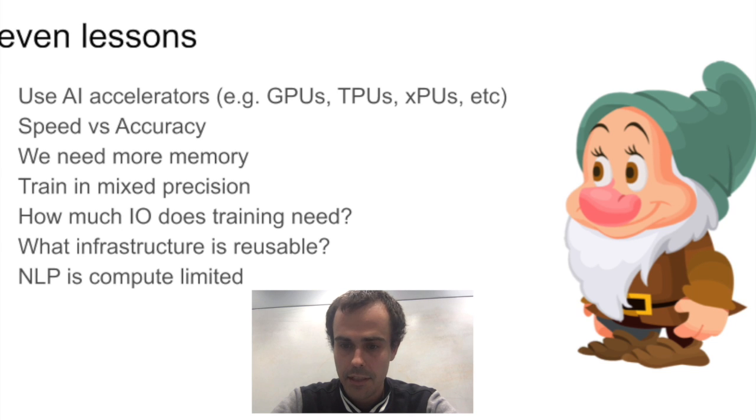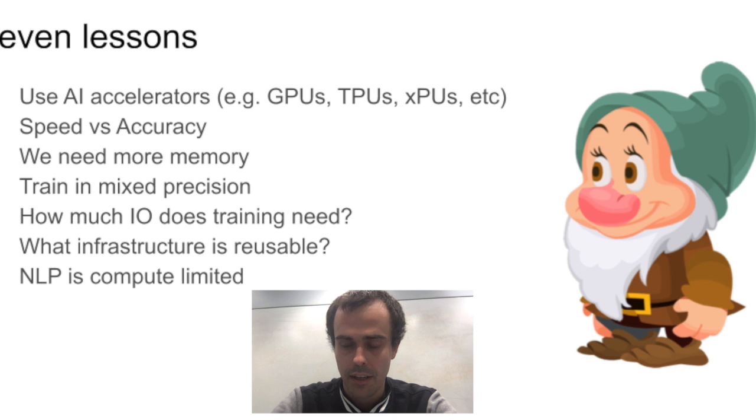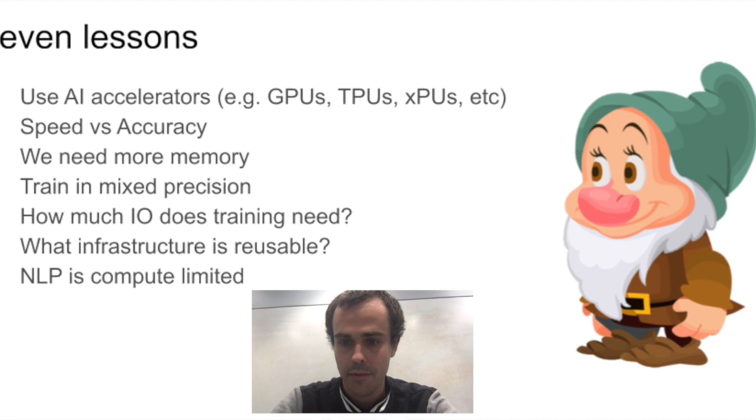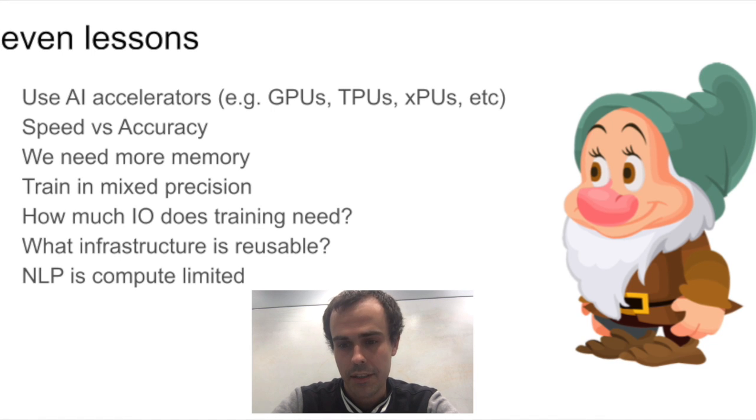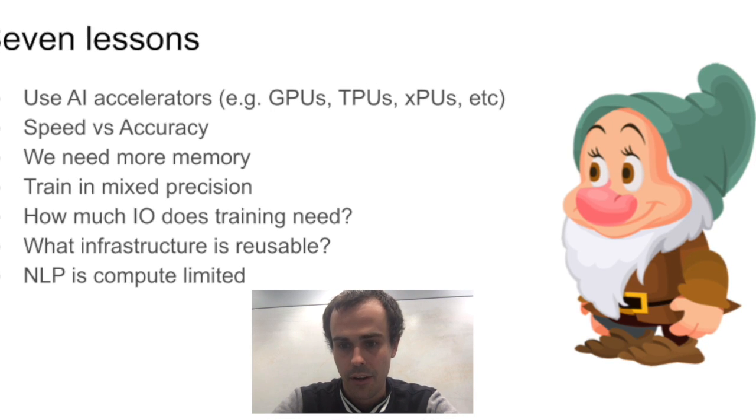The second one is that speed and accuracy is a fundamental trade-off. You can have a lot faster algorithm, or you can have a lot more accurate algorithm. What we really want is an algorithm that's both fast and accurate, and that's pretty hard.